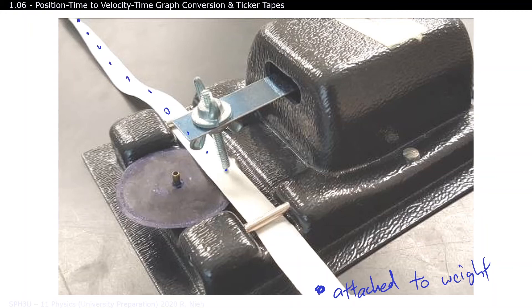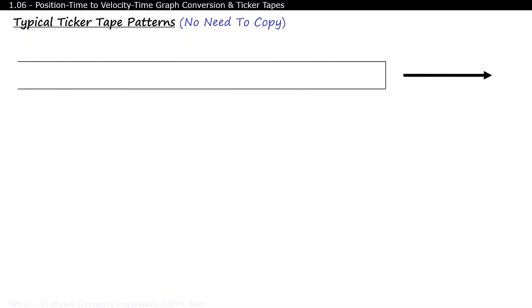Let's go through some examples. The first example shows an object that is moving at a constant velocity. See how evenly the dots are spread out, as the paper is being pulled to the right? Keep in mind that the ticker timer is stationary on the table, and it's just the paper that moves.